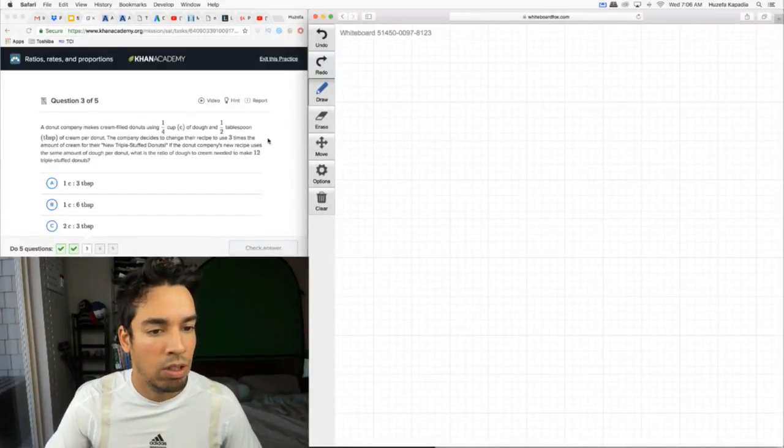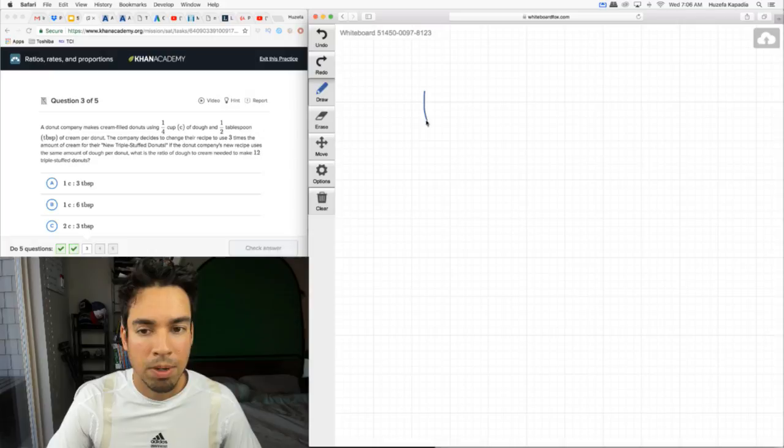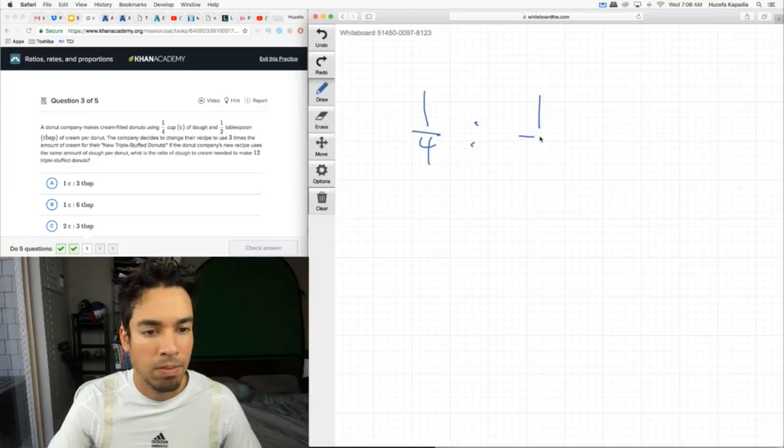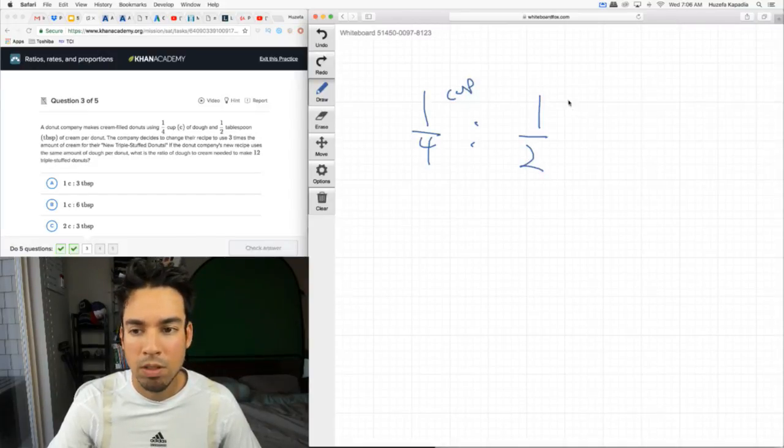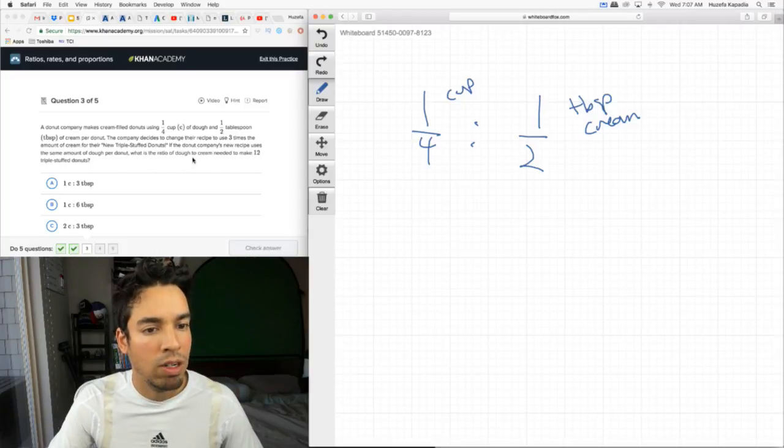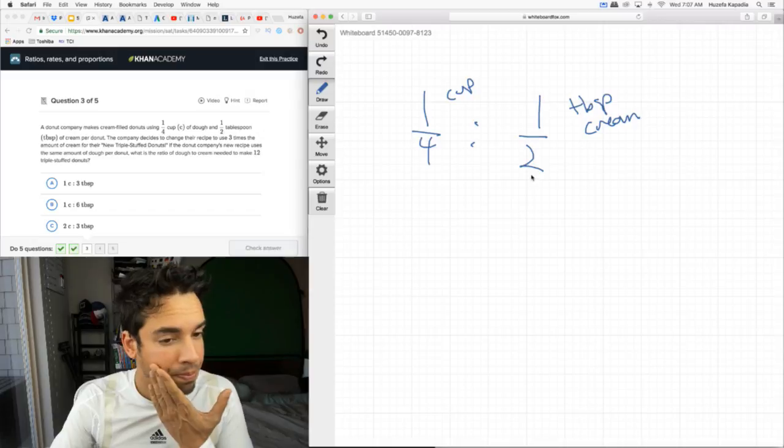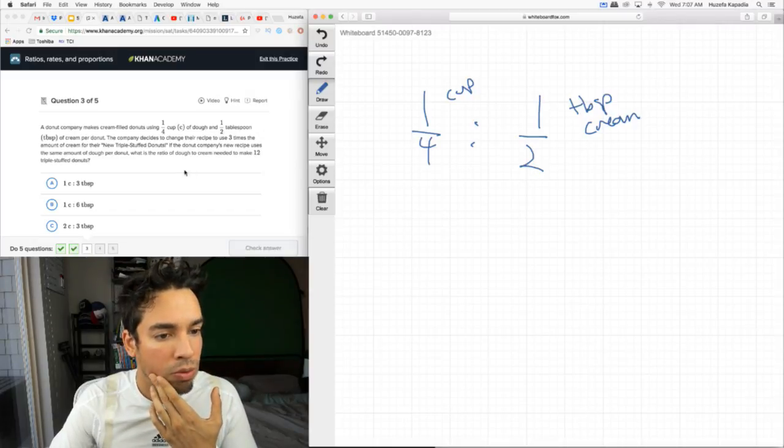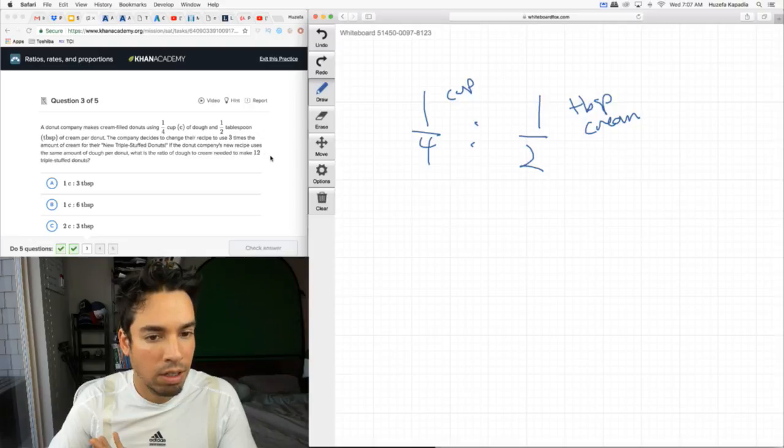Next question: A donut company makes cream filled donuts using one fourth cup of dough and one half tablespoon of cream. This is cup, this is tablespoon. The company decides to change the recipe to use three times the amount of cream for the new triple stuffed donuts. If the company's new recipe uses the same amount of dough per donut, what is the ratio of dough to cream needed to make 12 triple stuffed donuts?